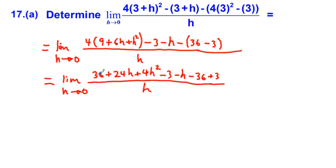Now we should be able to cancel: we have 36 minus 36 cancels, minus 3 plus 3 cancels. We're going to combine like terms. Equal to the limit as h approaches 0 of 24h minus h which is 23h, plus 4h², all over h.